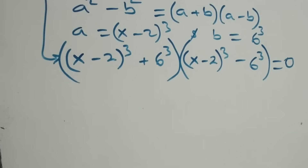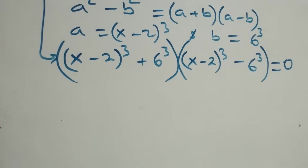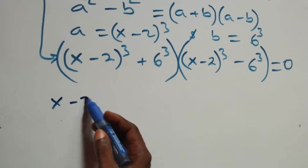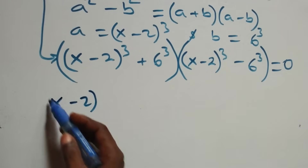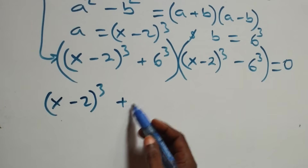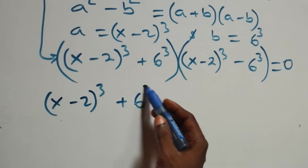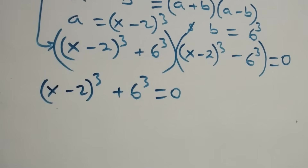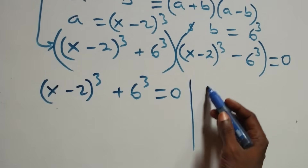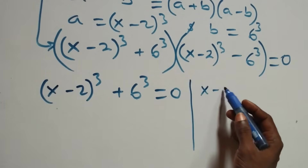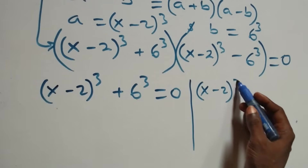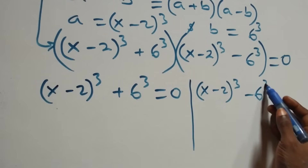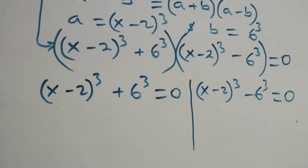We have two possible cases. The first one: x minus two raised to power three, plus six raised to power three, equals to zero. The second one: x minus two raised to power three, minus six raised to power three, equals to zero.